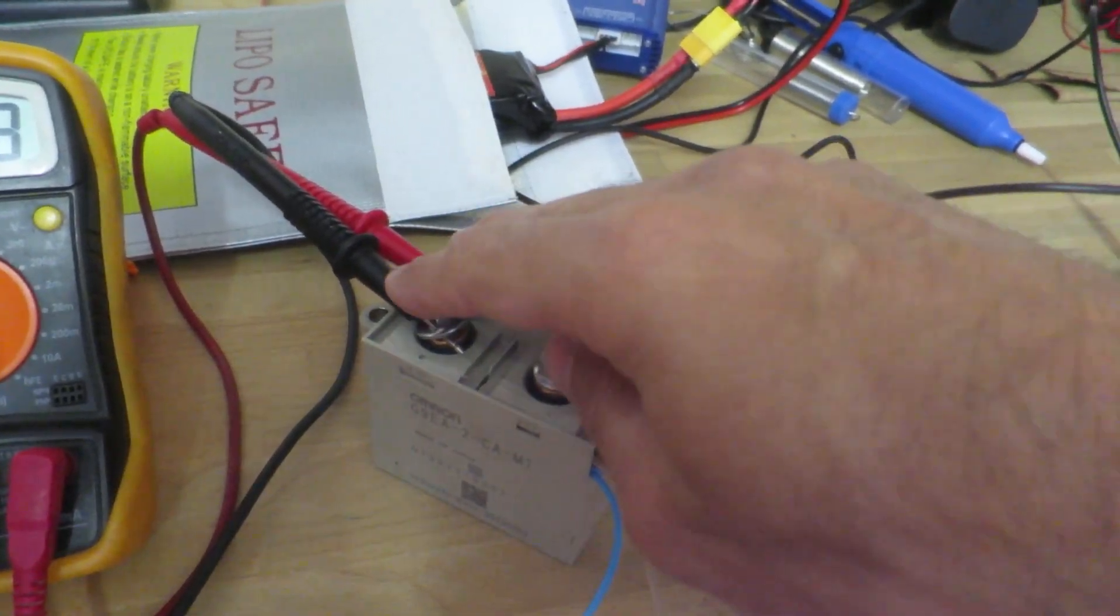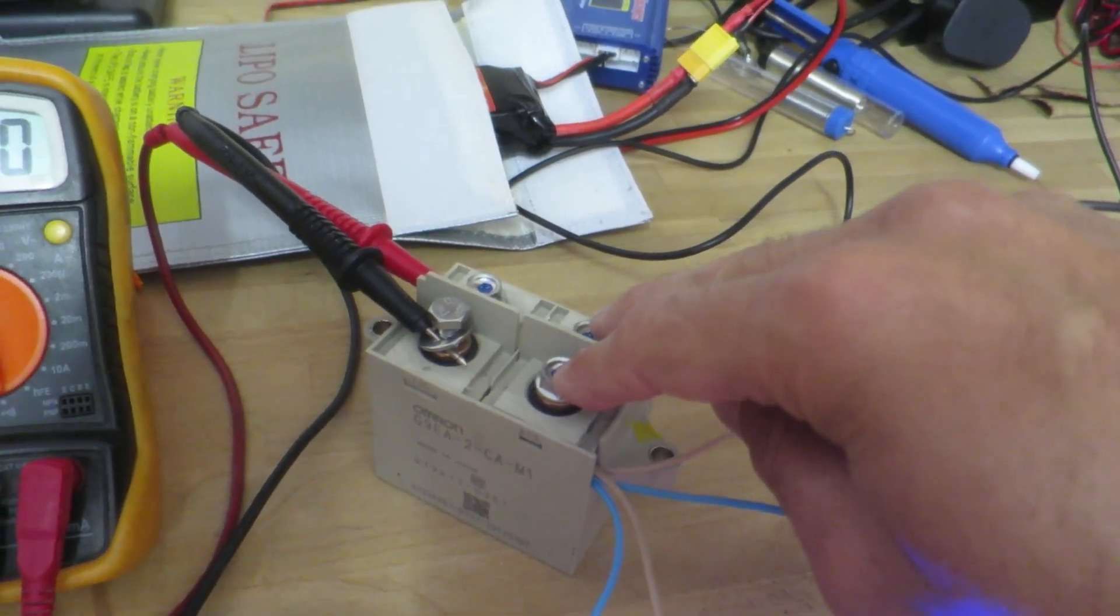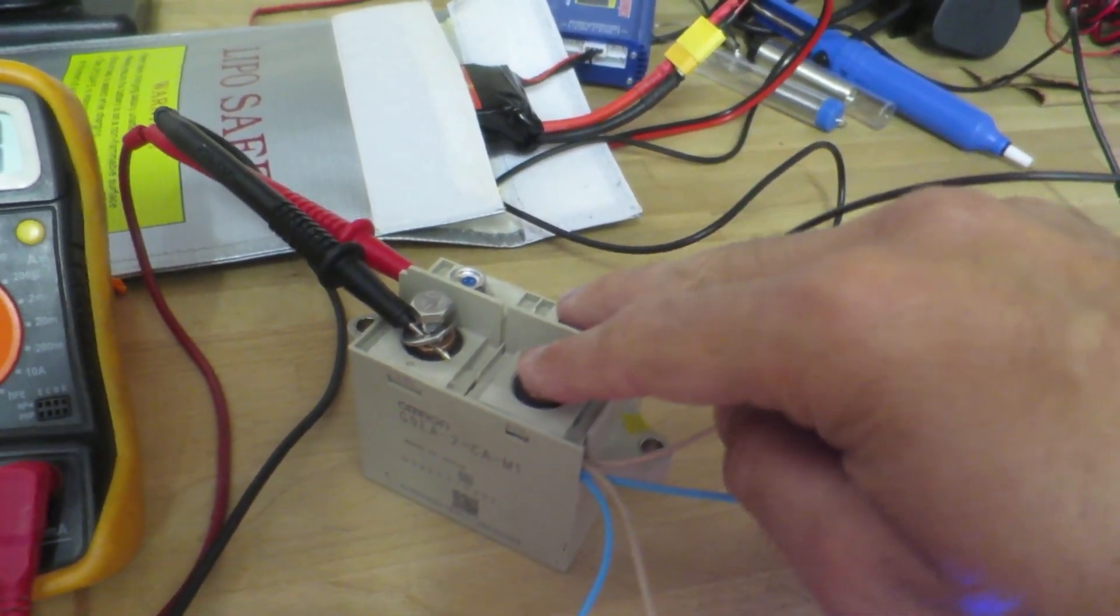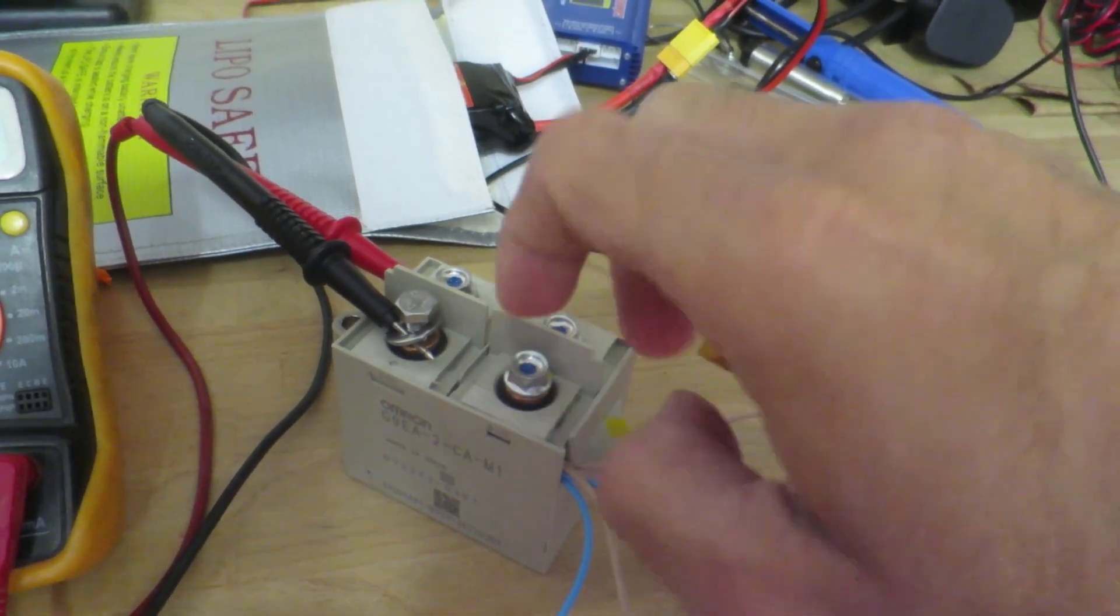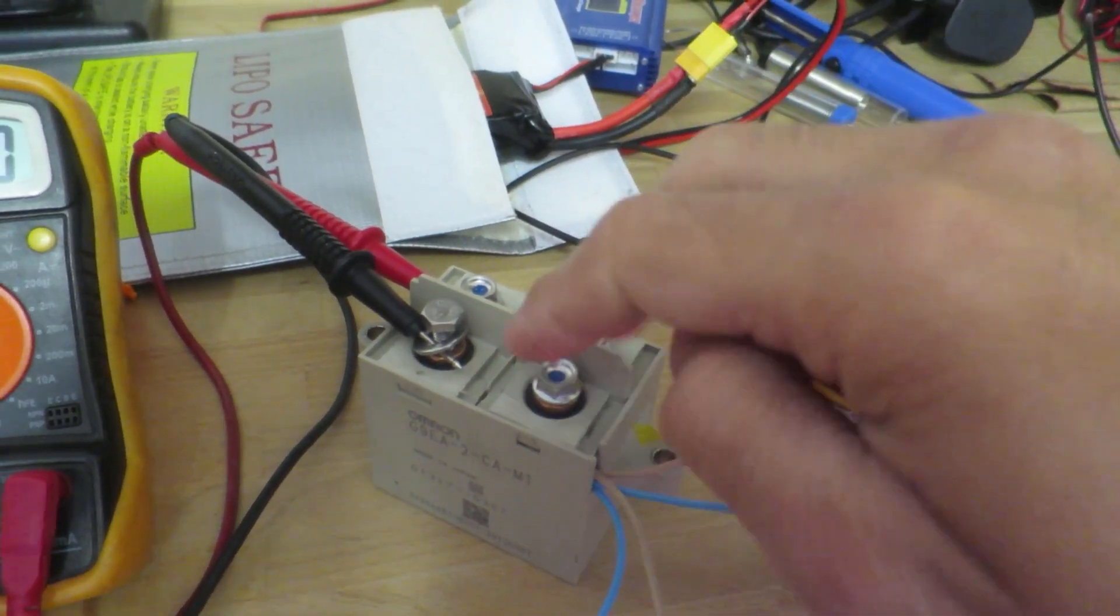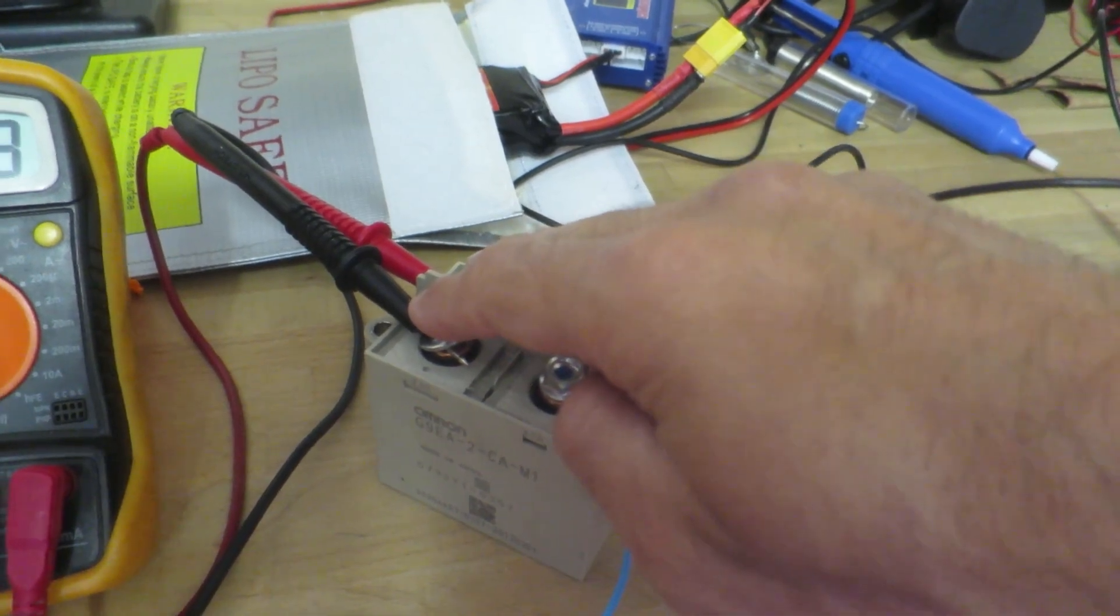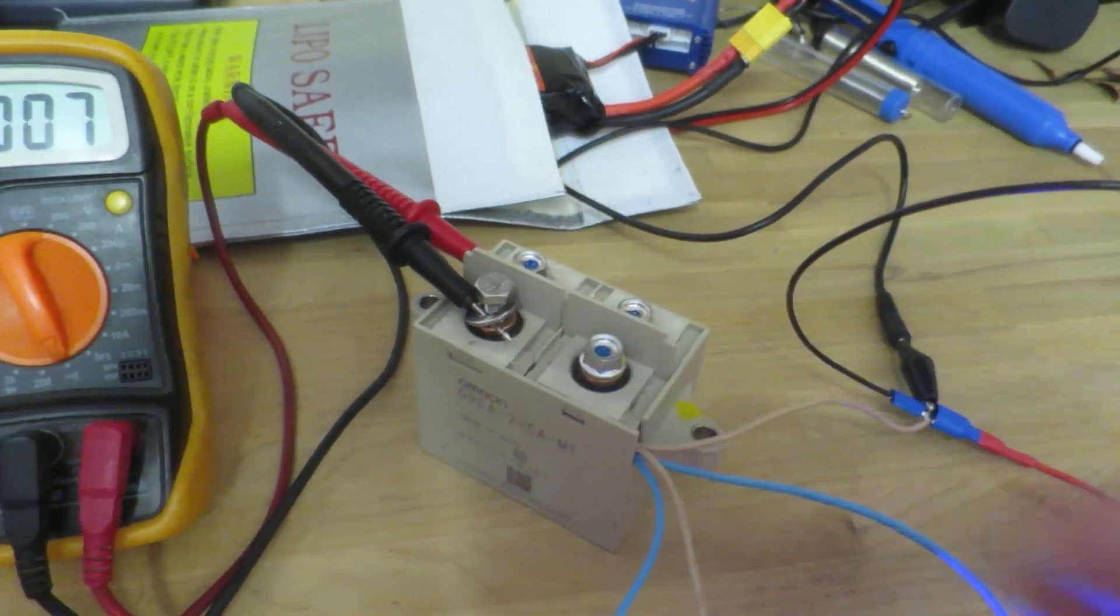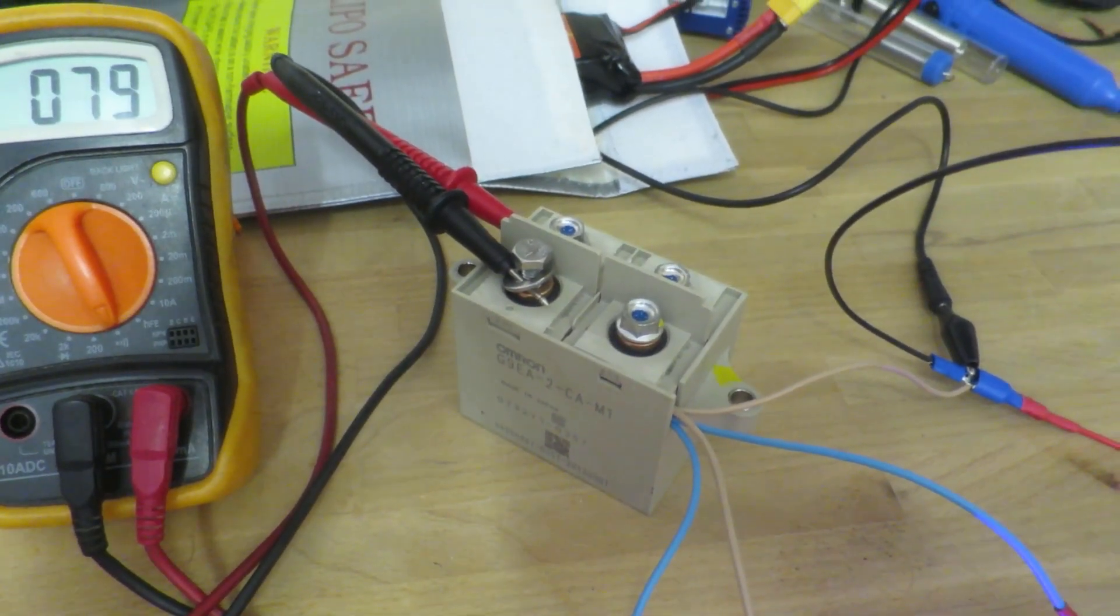So currently both of these are being driven but it doesn't matter because this circuit here, the pre-charge circuit, will be ignored because there's a high resistance in the way. All the power will flow through here and your pre-charging is done and fingers crossed that will stop my contactors from being damaged in the future.